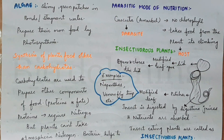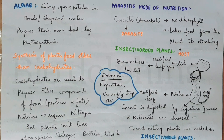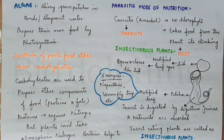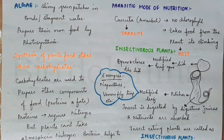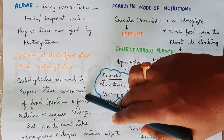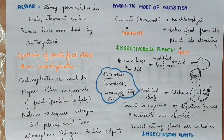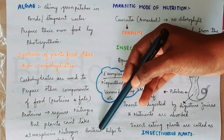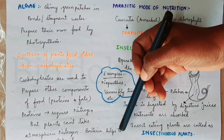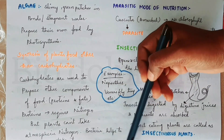Photosynthesis produces carbohydrates. After carbohydrates are formed, the energy released helps prepare other components such as proteins. To synthesize proteins, nitrogen is required. Plants obtain nitrogen with the help of bacteria.